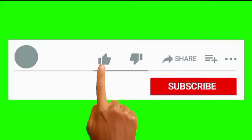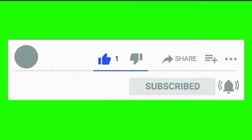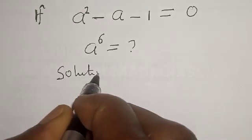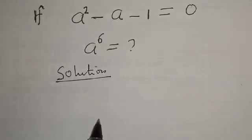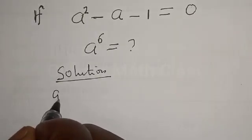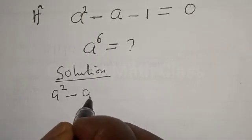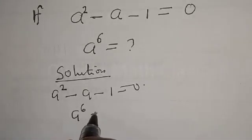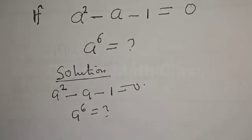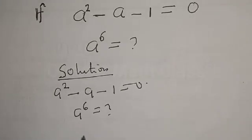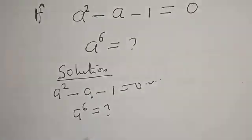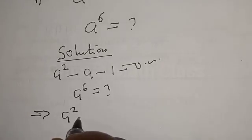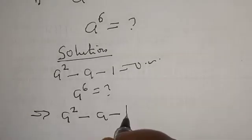But before I proceed, please don't forget to like, share, comment and subscribe. We have a squared minus a minus 1 is equal to 0, then a raised to power 6 is unknown. This is a quadratic equation. This implies that we have a squared minus a minus 1 equal to 0.